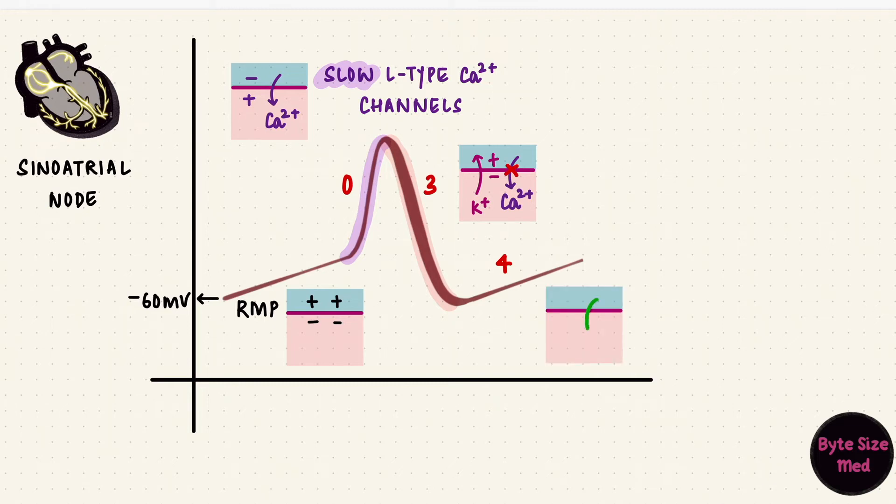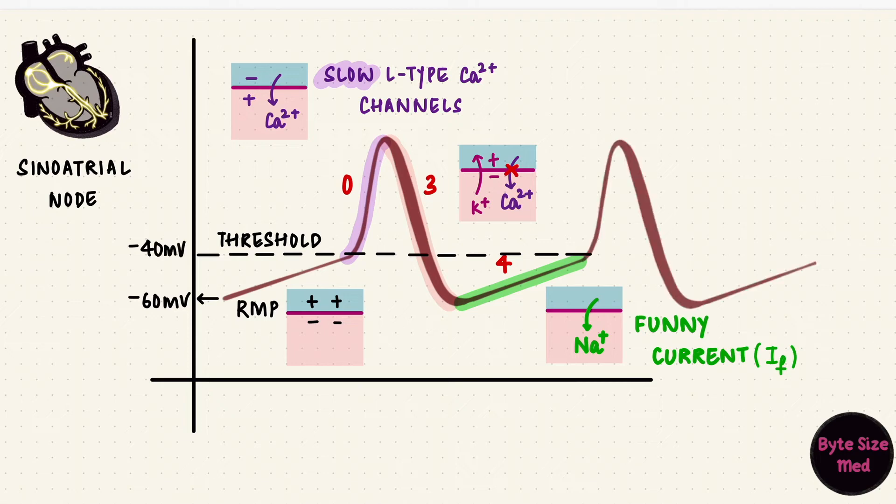The sinoatrial membrane is leaky and it allows sodium to enter the cell. The movement of ions creates currents, and this is called a funny current. If sodium keeps leaking into the cell, the membrane potential is going to become less negative and drift upwards to the threshold of around negative 40 millivolts, and that fires off another action potential.